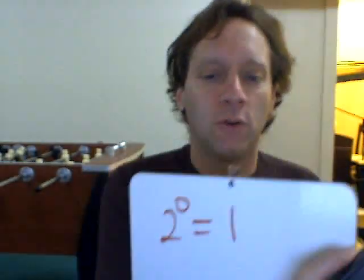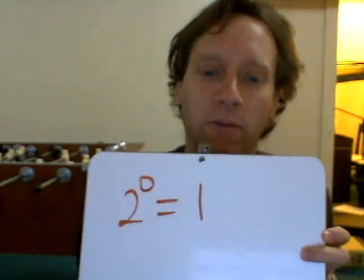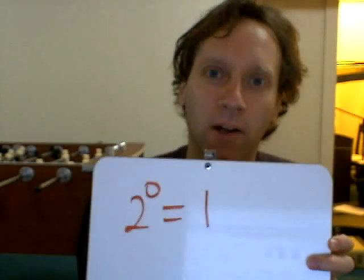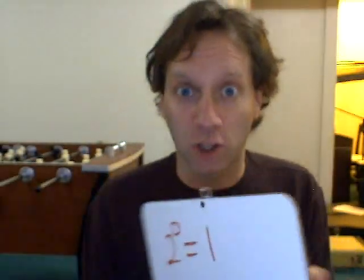The problem here is that 2 to the 0 equals 1 is stomping on your preconceived idea of what exponentiation — raising to a power — means. So let's erase that and talk about what we all agree on and nobody seems to have any problems with.